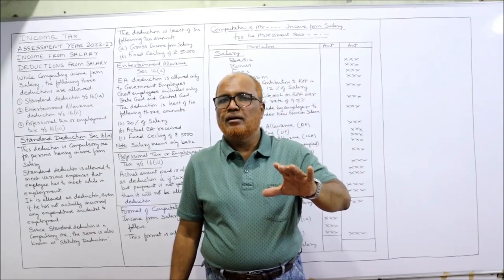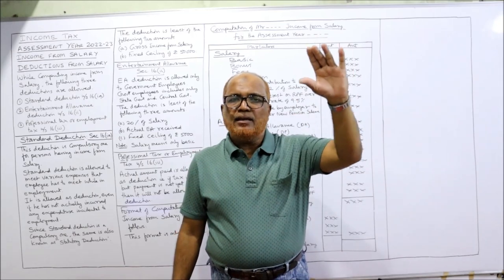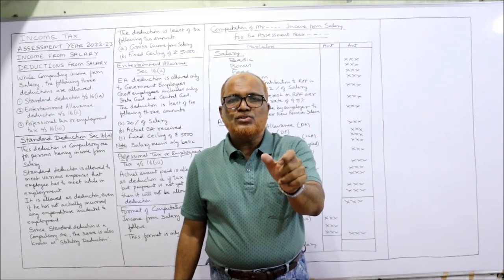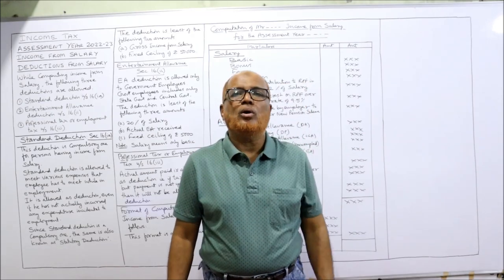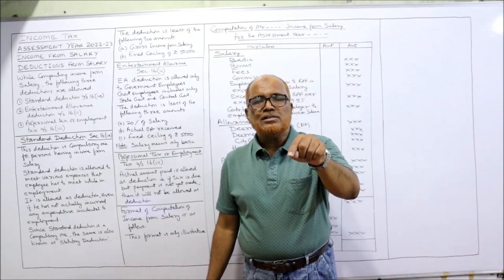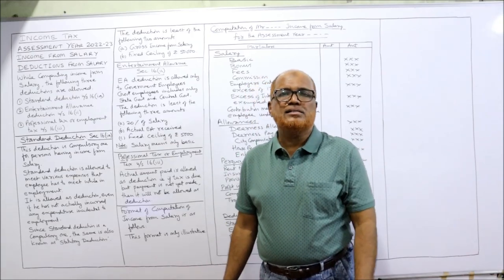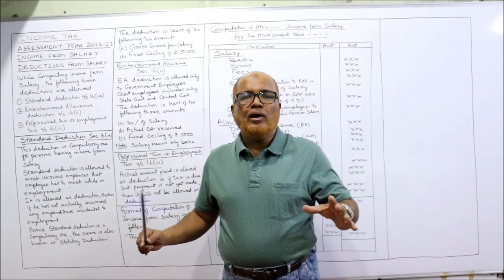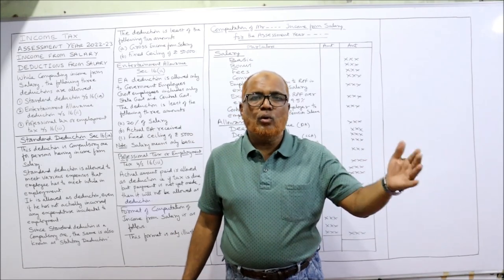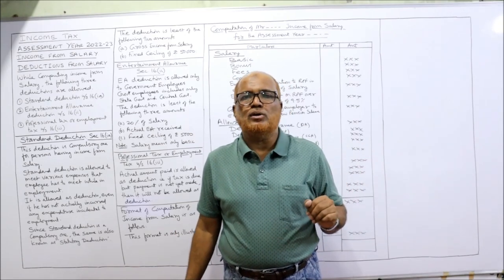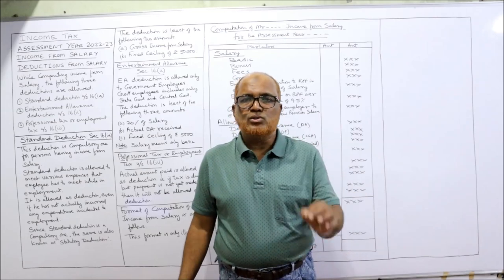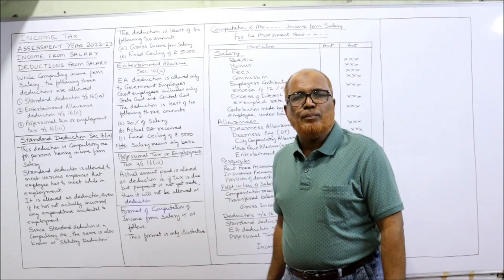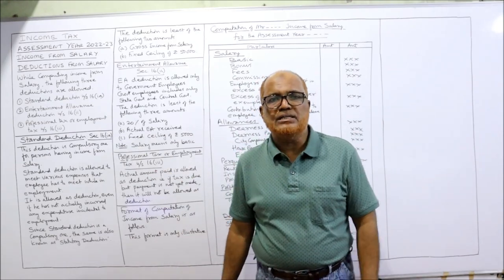Income Tax Act has given a procedure of how to compute income from salary. First, four subheads are there: salary, allowances, perquisites, and profit in lieu of salary. The total of these four subheads is called gross income from salary. From gross income from salary, deductions are allowed under Section 16, which I am going to explain. These videos are very important, so take a screenshot of the points written on the board.